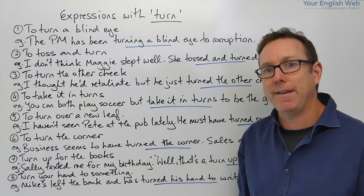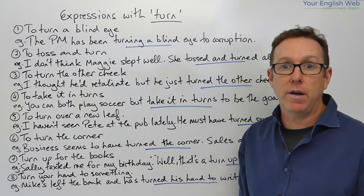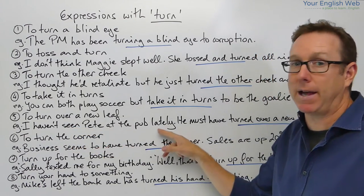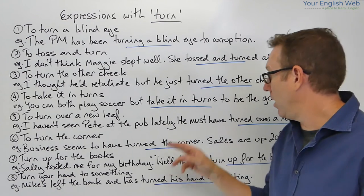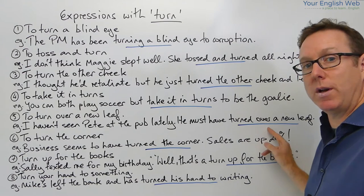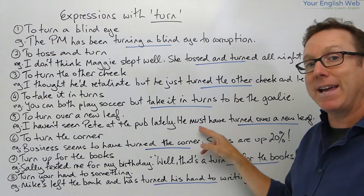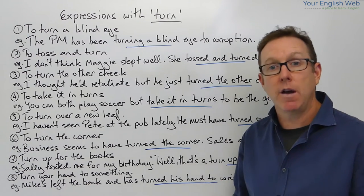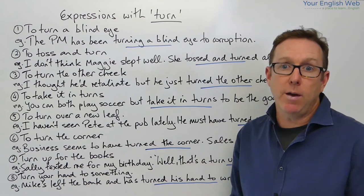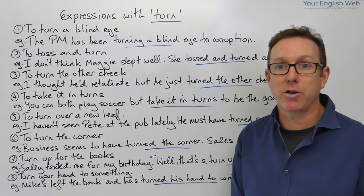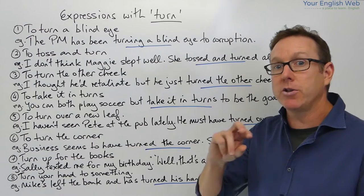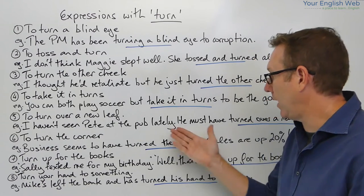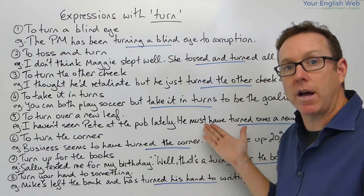The next one is to turn over a new leaf. Through context: I haven't seen Pete at the pub lately. He must have turned over a new leaf. This means he's changed his habits for the better. Because he was drinking too much and smoking too much — he doesn't go to the pub anymore. So he's turned over a new leaf; he's changed his habits for the better.